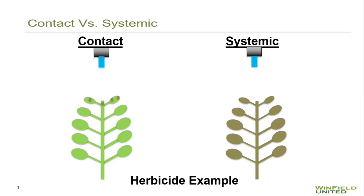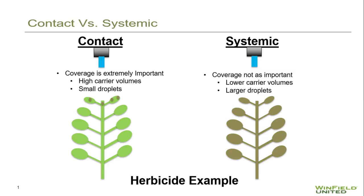So with contact type chemistries, higher carrier volumes and smaller droplet sizes are required so that we get very good coverage, whereas with systemic we can use lower carrier volumes and larger droplet sizes.